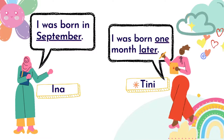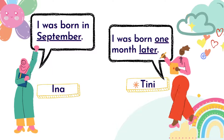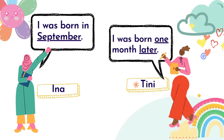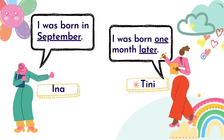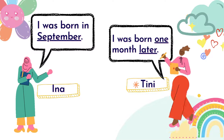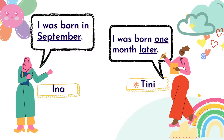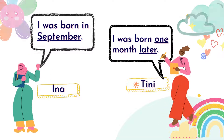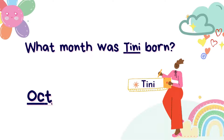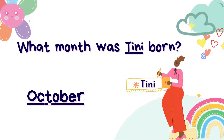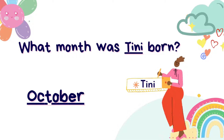Let's read the dialogue again. Ina said, 'I was born in September.' Then Tini said, 'I was born one month later.' So, Tini was born in October — one month later after September.